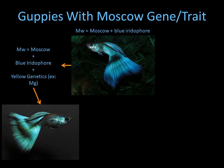If you add yellow genetics to the Moscow you will get a green Moscow. Many times what people do to make a green Moscow is cross a blue Moscow to a green female, and it gives this kind of result here.